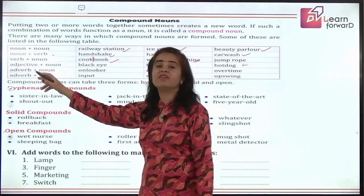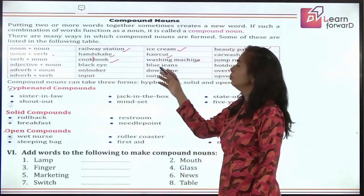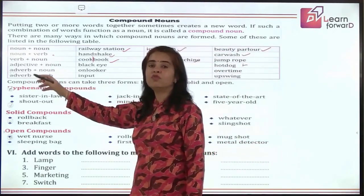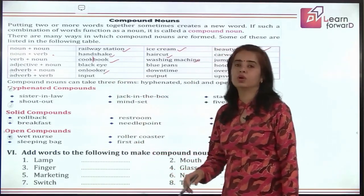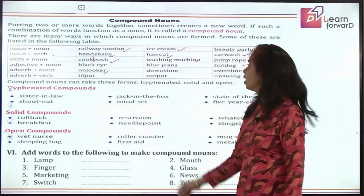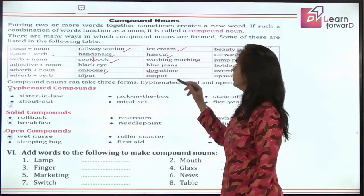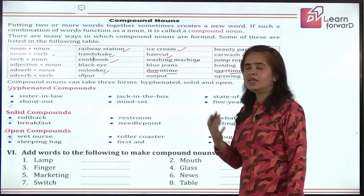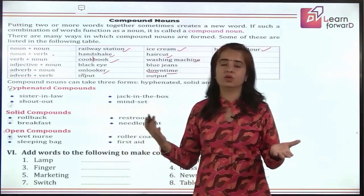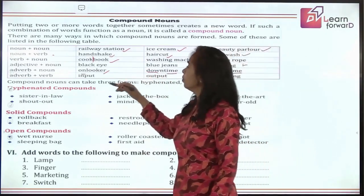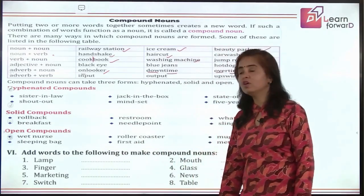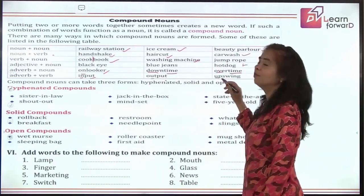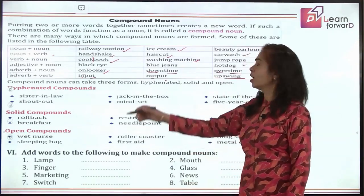Then we have adjective followed by a noun: 'black eye', 'blue jeans', 'hot dog'. These are compound nouns formed with adjectives. Then adverb followed by a noun: 'on' is an adverb and 'looker' is a noun — giving 'onlooker'. 'Down' plus 'time' gives 'downtime'. 'Overtime' — you've come across this many times. Adverbs can also be followed by verbs: 'in' plus 'put' gives 'input', 'out' plus 'put' gives 'output', and 'up' plus 'swing' gives 'upswing'.